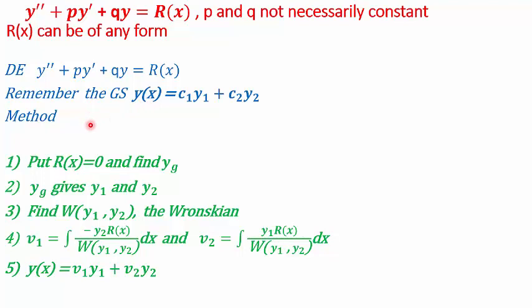What is the method? First, we take the right-hand side of our given differential equation to be 0 and find the general solution, from which we take y1 and y2. Next, we find the Wronskian W and use it to find our unknown functions v1 and v2. v1 is found by solving the integral of −y2·r(x)/W dx, and v2 is the integral of y1·r(x)/W dx.